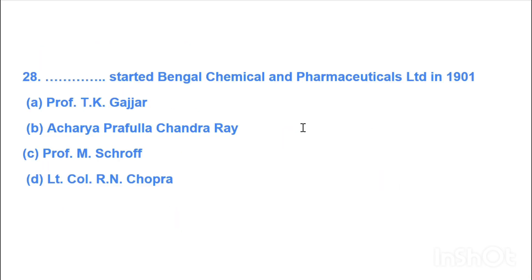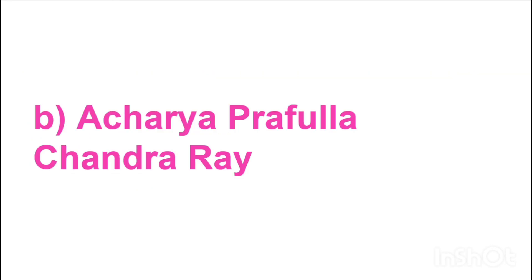Next question: Who started Bengal Chemical and Pharmaceutical Limited in 1901? Option A: Professor T.K. Gajar, Option B: Acharya Prafulla Chandra Rai, Option C: Professor M. Scroff, Option D: R.N. Chopra. Answer is Option B, Acharya Prafulla Chandra Rai.